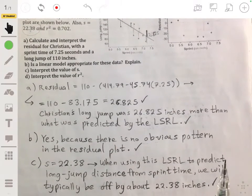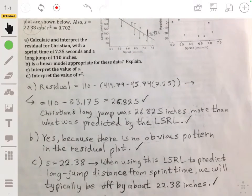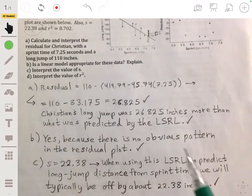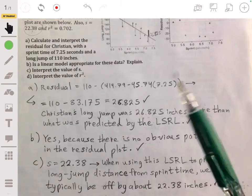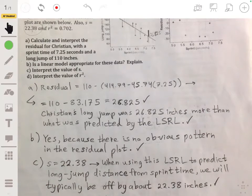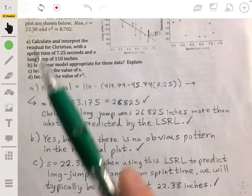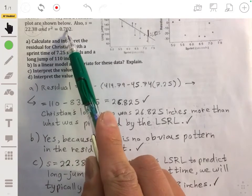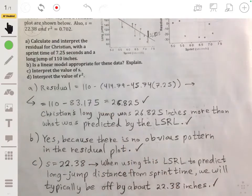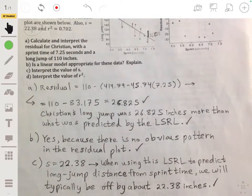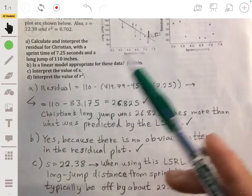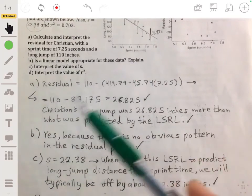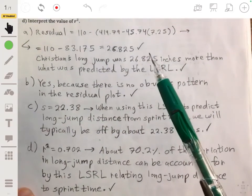So again, it's similar to standard deviation that you've been using up to now. Now the r-squared, remember this is the coefficient of determination. It says that r-squared is 0.702. So we interpret that as a percentage, so about 70.2%. What we say is that about 70.2% of the variation in long jump distance can be accounted for by this least squares regression line that relates long jump distance with sprint time.